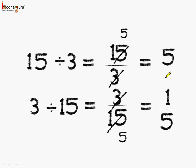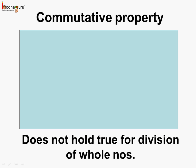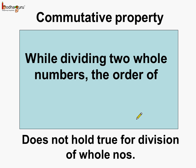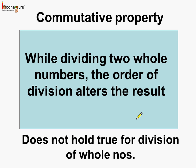Here we got 5 and here the answer is 1 by 5. So we can say the commutative property does not hold true for division of whole numbers. Which means while dividing two whole numbers, the order of division alters the result. As we saw, we did not get the same answer when we changed the order of division between 3 and 15.